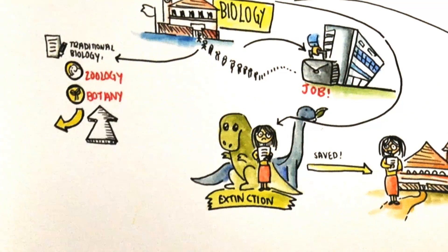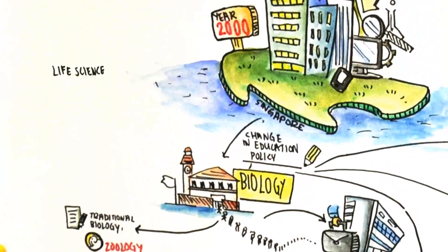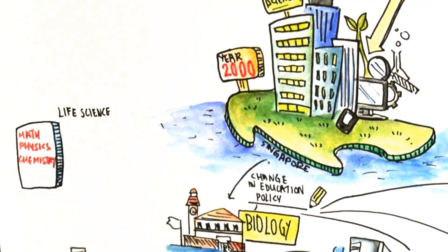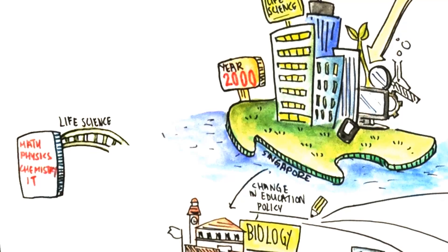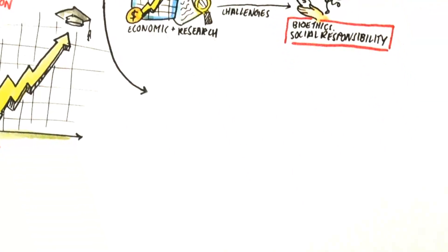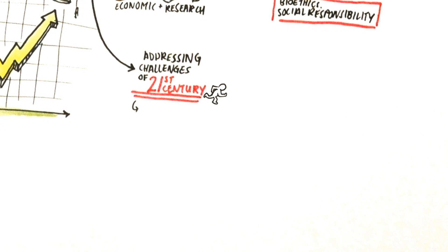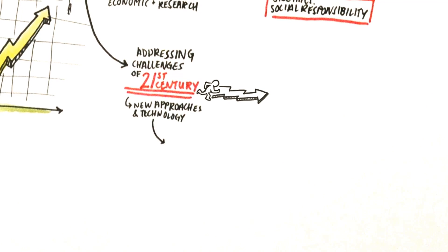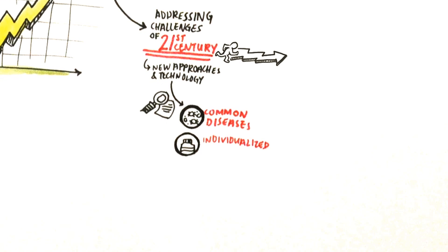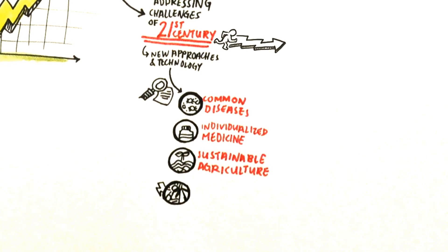New topics such as food science, industrial biotechnology and genetic engineering emerged. The life sciences wave brought mathematics, physics, chemistry, IT and engineering together with biology. Life sciences will play an important role in addressing the challenges of the 21st century — for example, new approaches and technologies required in research into common diseases, individualized medicine, sustainable agricultural production and alternative fuels.